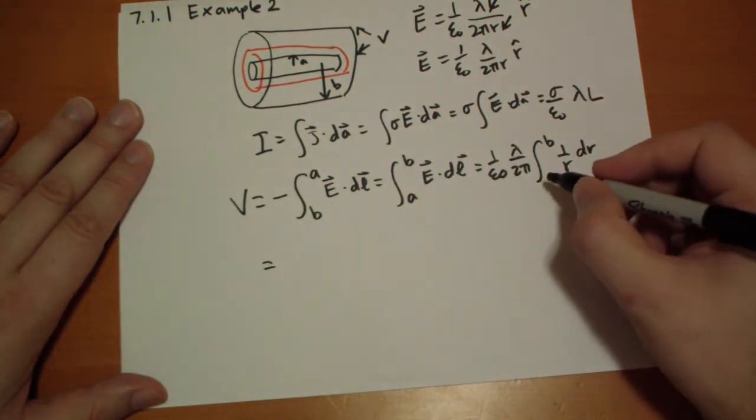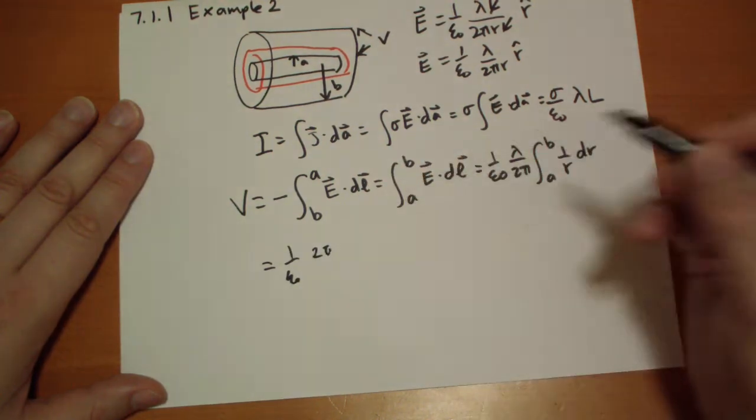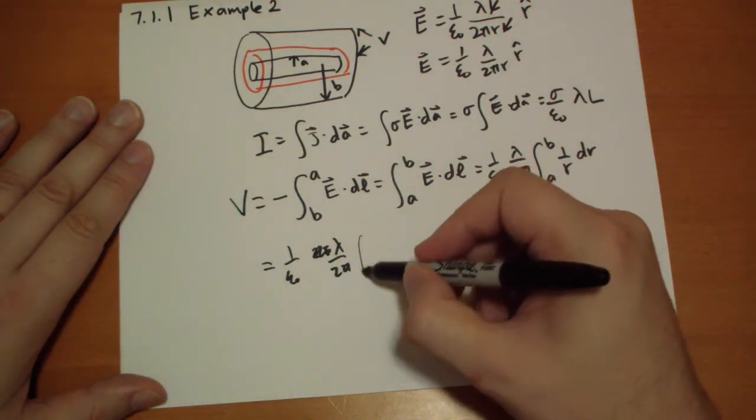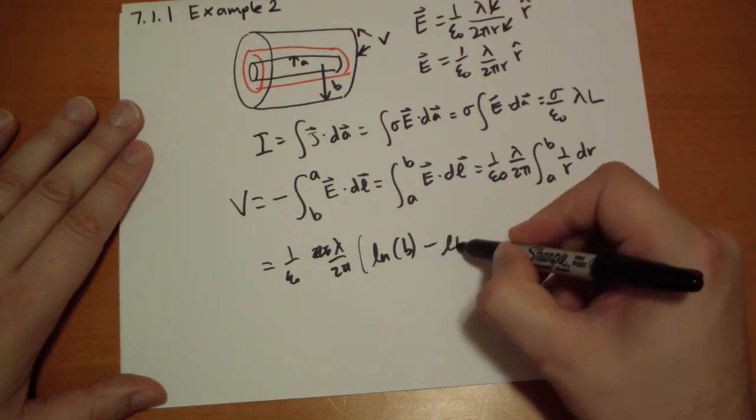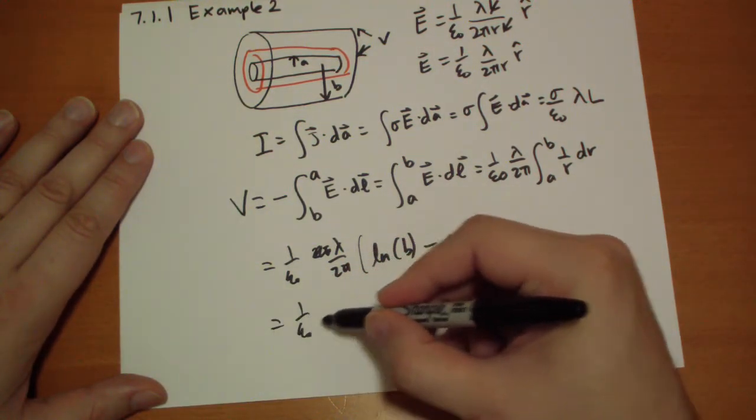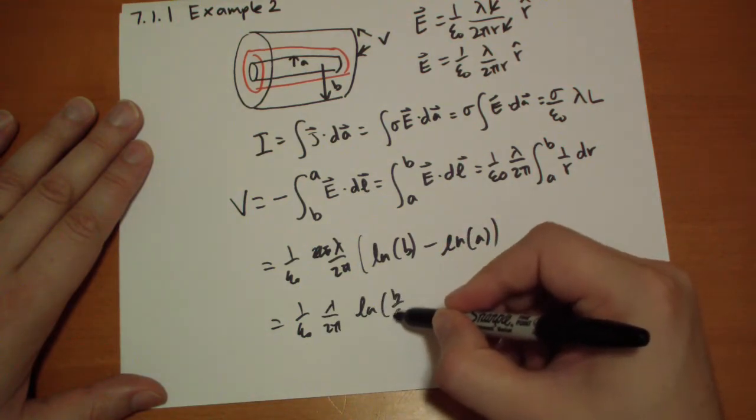Well, what does that equal? That's rather easy to solve. That's just one over epsilon naught, lambda over 2π. This is going to be log of B minus log of A. And we can just rewrite that as a fraction of log of B over A.